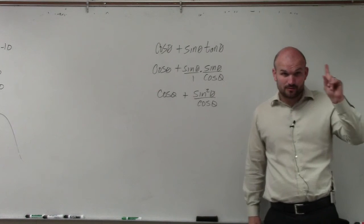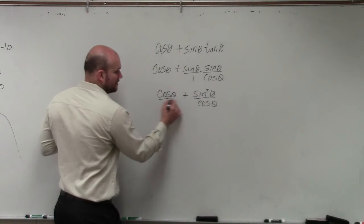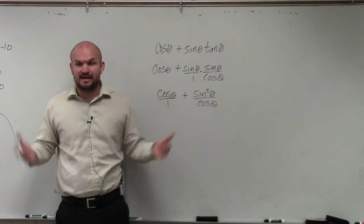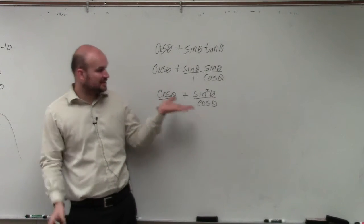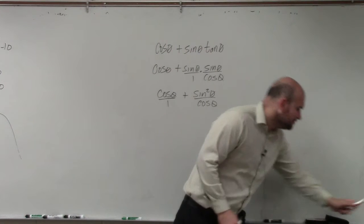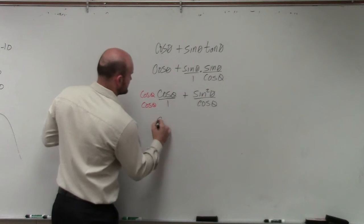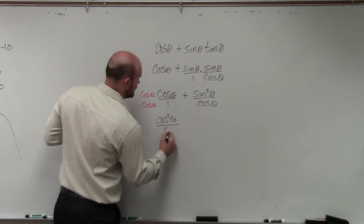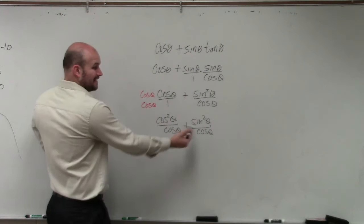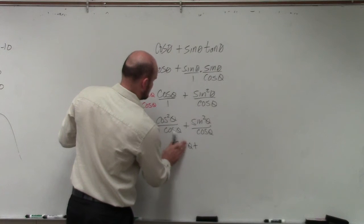But now we still need to combine them. We're trying to get this down to one trigonometric identity or number, so we have to combine them. We have a fraction over here, and we can rewrite that as a fraction. Remember, to add fractions or subtract fractions they have to have the same denominator. So the least common denominator of one and cosine is going to be cosine. So I multiply cosine over cosine on the left side, and I get cosine squared theta over cosine theta plus sine squared of theta over cosine of theta.